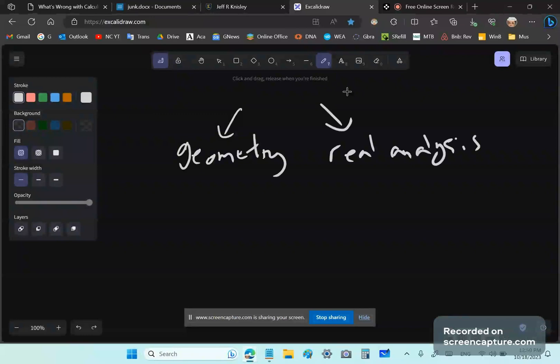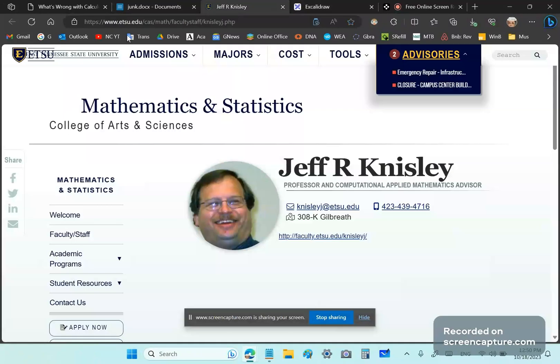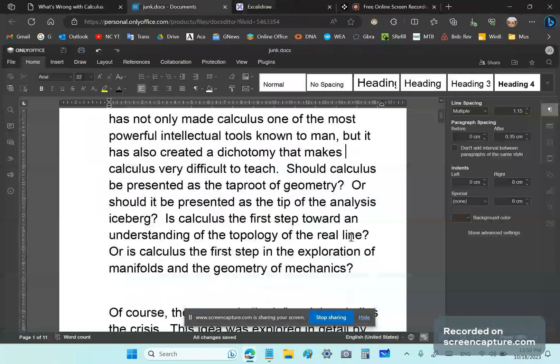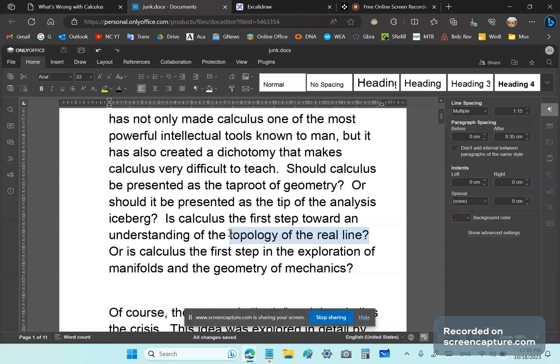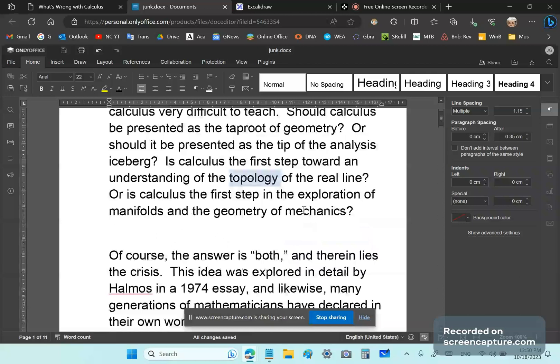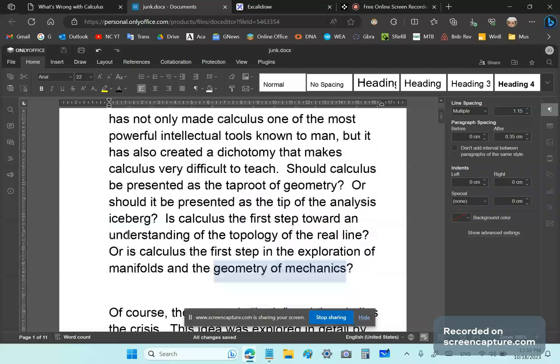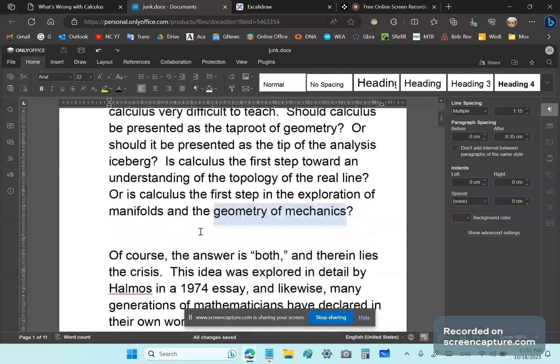So now we've got, we're going to go into the dichotomy. Should calculus be presented as a taproot of geometry or should it be presented as a tip of the analysis iceberg? So that's probably the dichotomy. So maybe we should write the dichotomy down. So it says geometry or the bullshit known as real analysis. There is no such thing as a real number, by the way. But I'm not going to go into that right now.